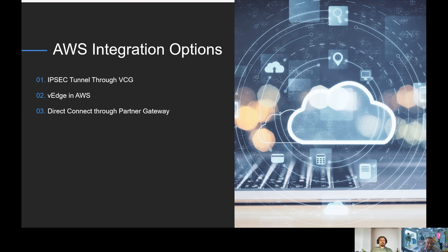Within the AWS integration, we're going to touch a little bit on the IPsec tunnel through the VeloCloud gateway network and what that looks like. We're also going to talk about the virtual edge within the AWS environment, and then we're also going to talk about the direct connect through the partner gateway within the VeloCloud architecture.